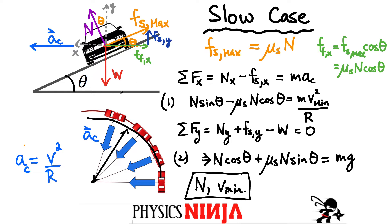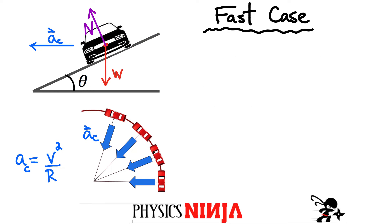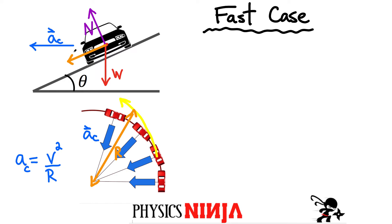Now we're going to set up the equations for the case where you're going really fast. Imagine you're trying to go around this bend but you're going too fast. What's going to happen is that the total force toward the center is not big enough and you'll end up following a radius that is bigger than the designed radius — because you're going too fast. In this case friction always opposes the motion, so the force of static friction is now acting down the ramp. We're again going to look at the maximum value.